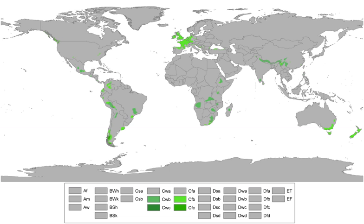Many oceanic climates have frequent cloudy or overcast conditions due to the near-constant storms and lows tracking over or near them. The annual range of temperatures is smaller than typical climates at these latitudes due to the constant stable marine air masses that pass through oceanic climates, which lack both very warm and very cool fronts.